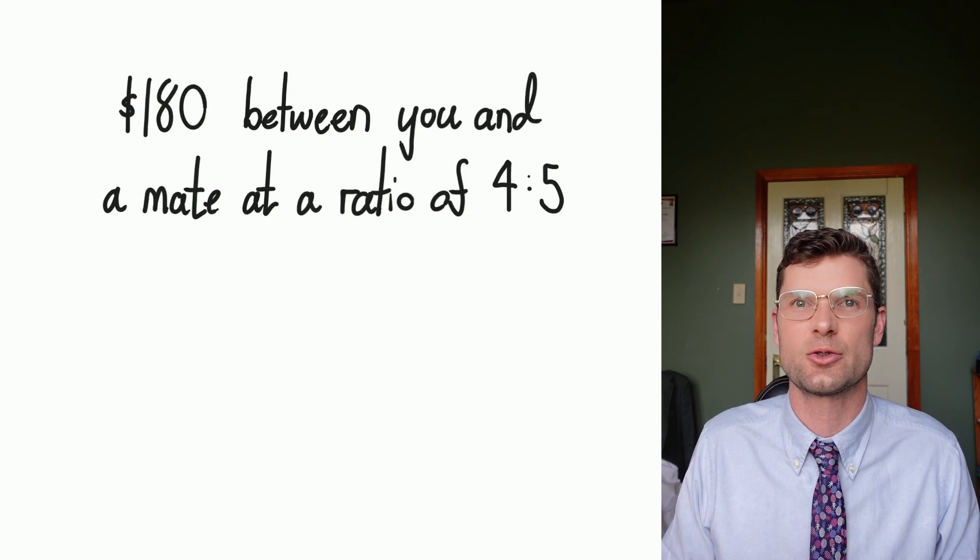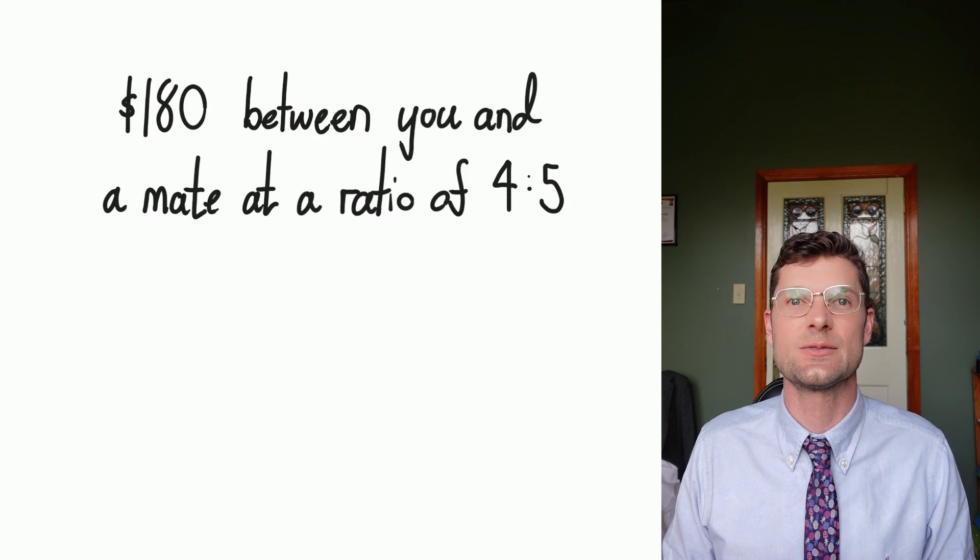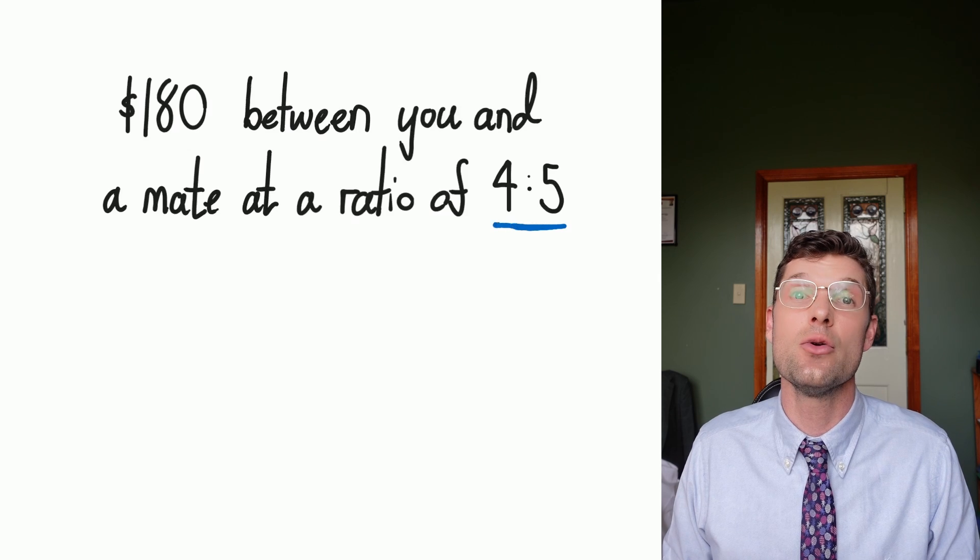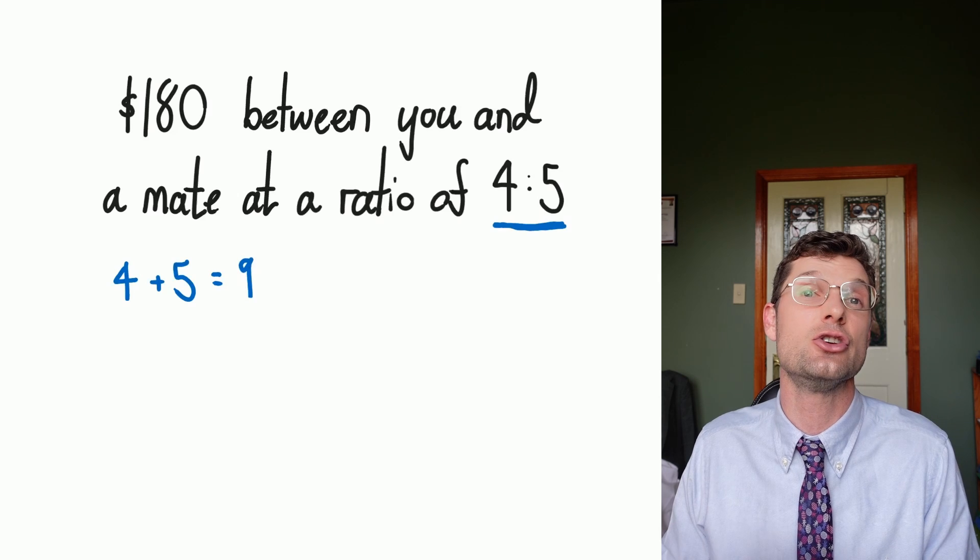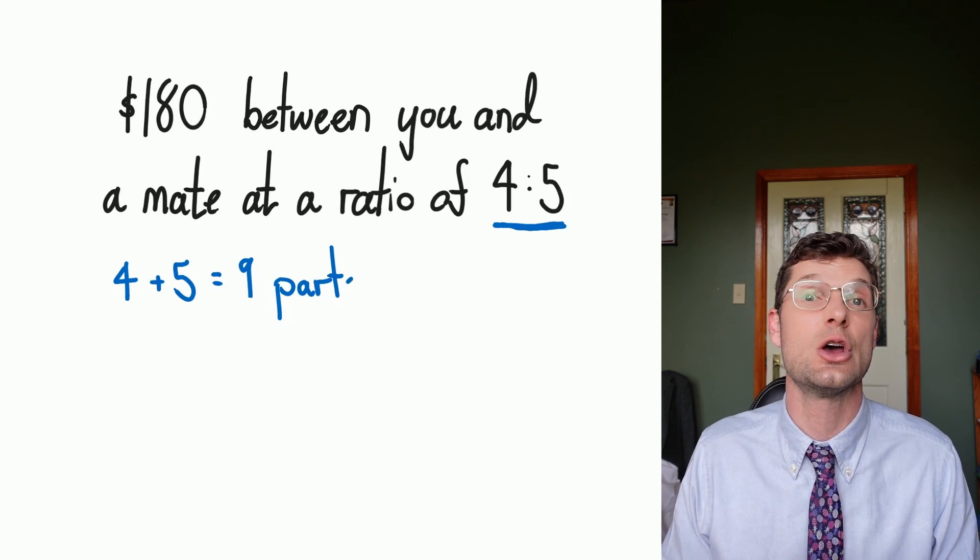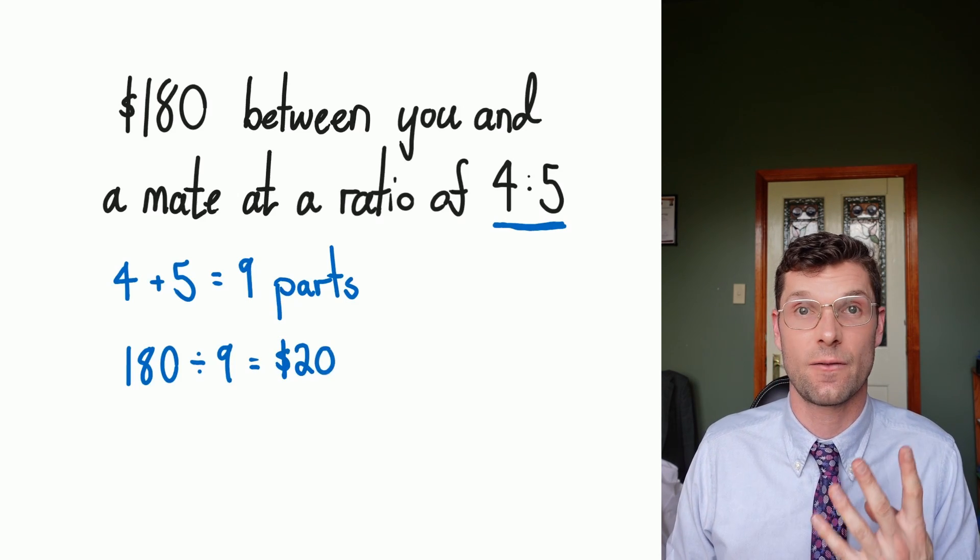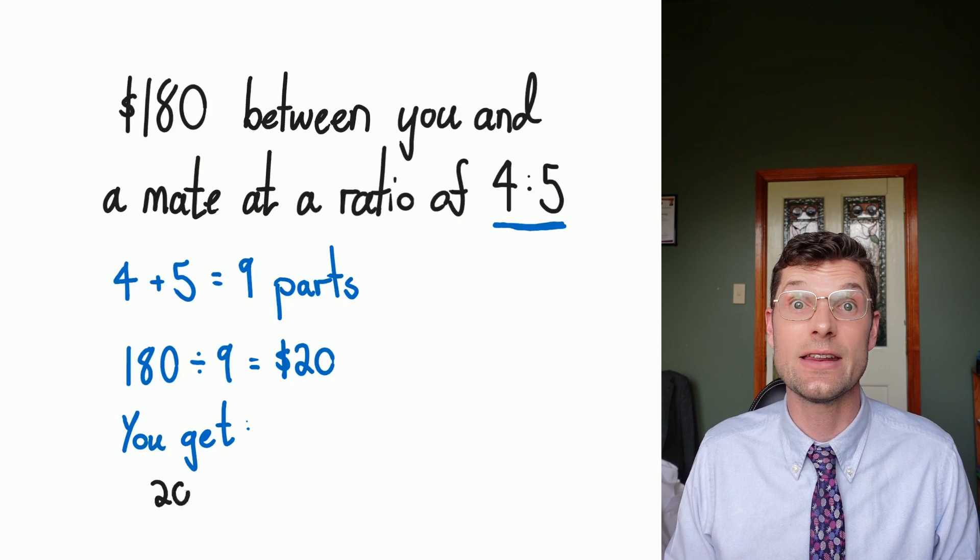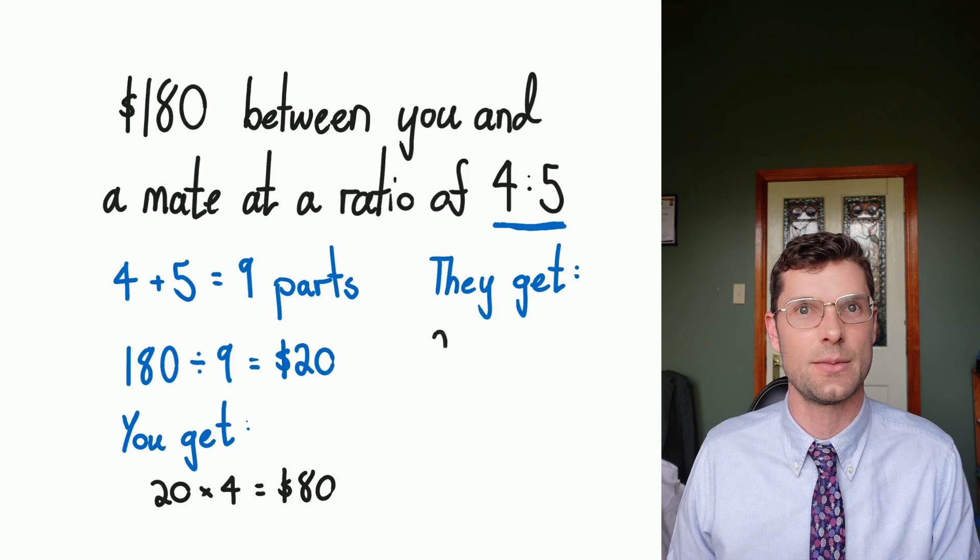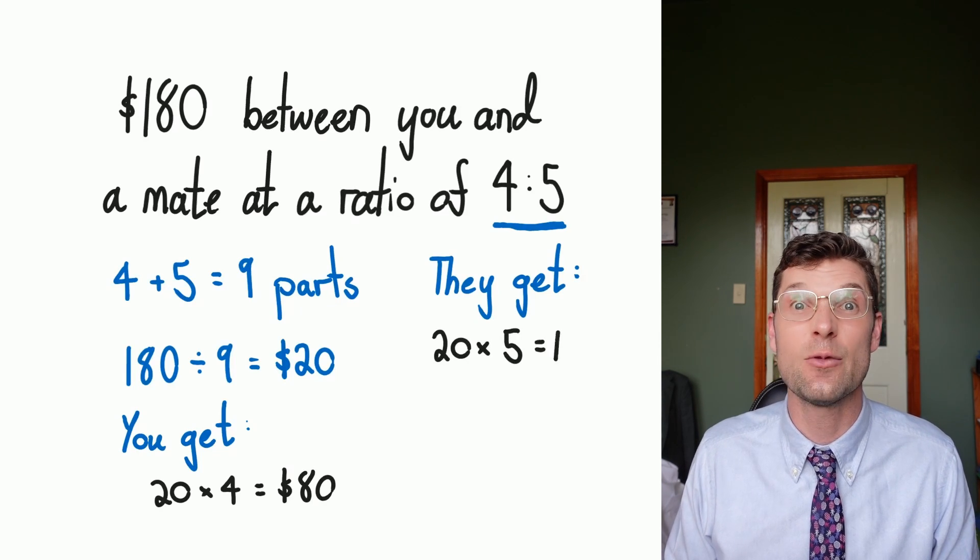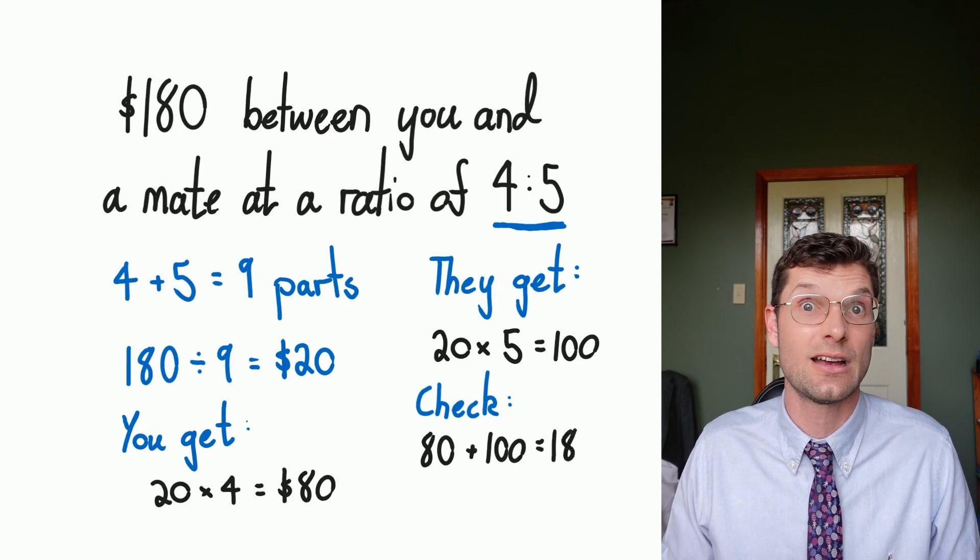When we have a ratio of 2 to 1, you work twice as hard, these questions can be a little bit easy. But this time, you didn't work as hard. We're gonna split this money at a ratio of 4 to 5. So we've got to work out what one part is equal to. 4 plus 5 equals 9, and we're gonna use that 9 to divide the total amount into each individual part. 180 divided by 9 is gonna be $20. You earned 4 parts of that total amount, so 20 times 4 equals 80. That's how much you're going home with. Your friend did 5 parts, so 20 times 5 equals $100. Again, we should always check: 80 plus 100 equals 180. And we said that your friend did more work, so it makes sense.